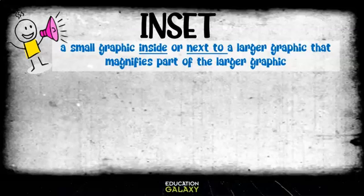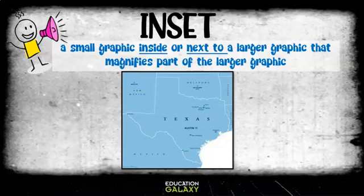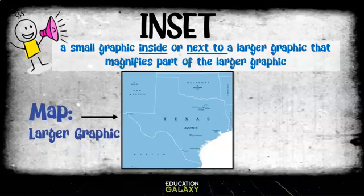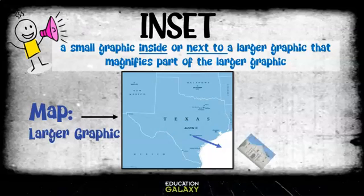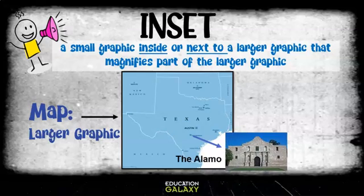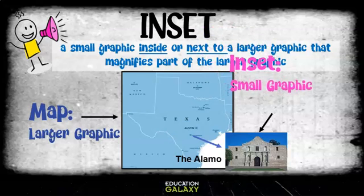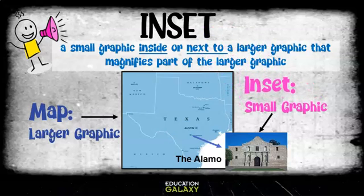This is a map of Texas. That is our larger graphic. We're going to zoom in on the town of San Antonio. How many of y'all have been to San Antonio? Most likely you saw the Alamo. This picture of the Alamo is our inset — it's our smaller graphic beside our larger graphic.